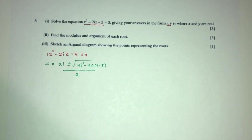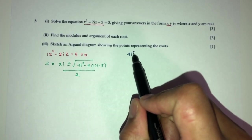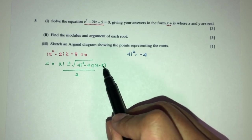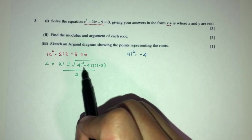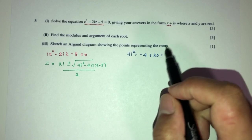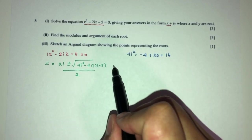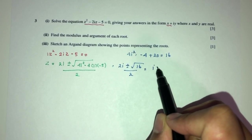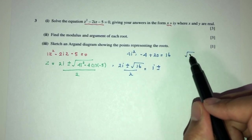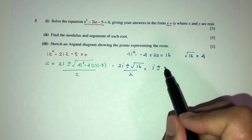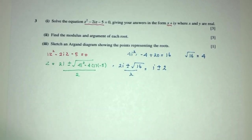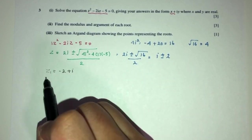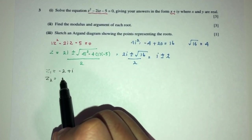Simplifying: i² = −1, so 4i² = −4. Then −4 − (−20) = −4 + 20 = 16. So z = (2i ± √16) / 2 = (2i ± 4) / 2 = i ± 2. The two roots are z₁ = −2 + i and z₂ = 2 + i.